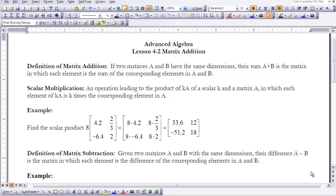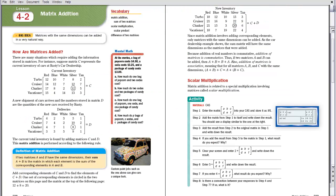So in order to add matrices, the first thing you have to have is two matrices that have the same dimension, same number of rows by the same number of columns. I'm going to have you turn to page 222 in your textbook. You might want to pause the video real quick to get your book to 222.